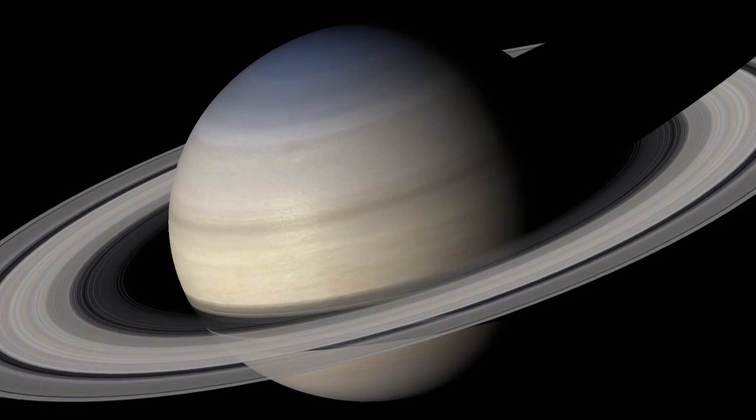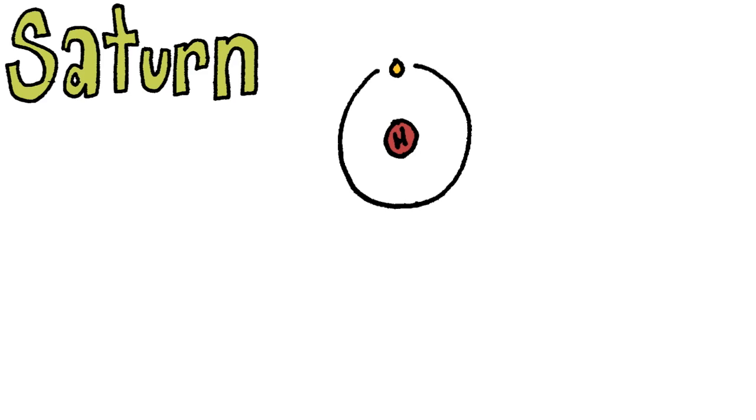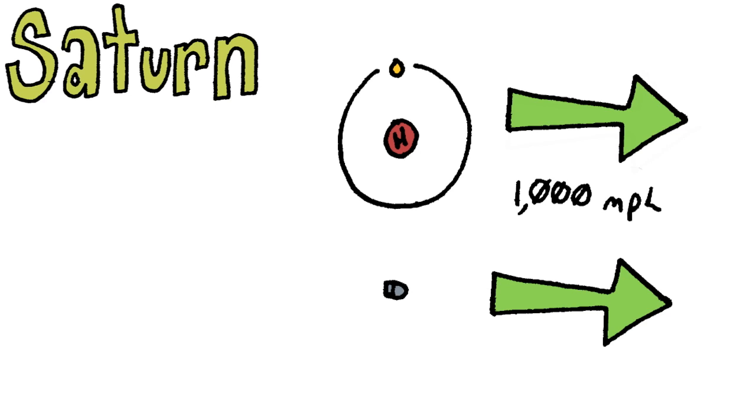What about the good ol' ring planet, Saturn? Saturn has an atmosphere, not unlike Jupiter, that is made primarily of hydrogen. Since this atmosphere is so light, winds can reach speeds of roughly 1,000 miles per hour, which, in comparison, is about the same speed a bullet travels.